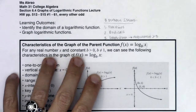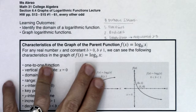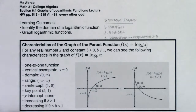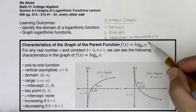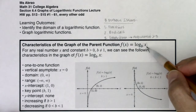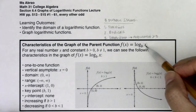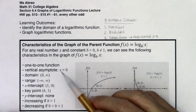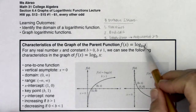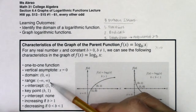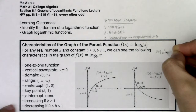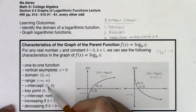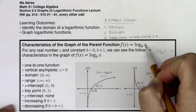For any real number x and any positive constant not equal to one, we can see the following characteristics for the graph of log base b of x. It is a one-to-one function. We will have a vertical asymptote at zero — you will always have a vertical asymptote when your argument is equal to zero. The domain is zero to infinity, the range is all real numbers, and the x-intercept is (1, 0). When the argument is one, the exponent is always zero, so plugging one into the function gives zero back out.